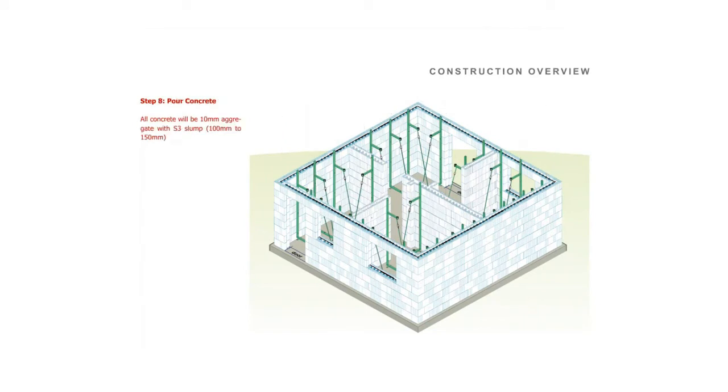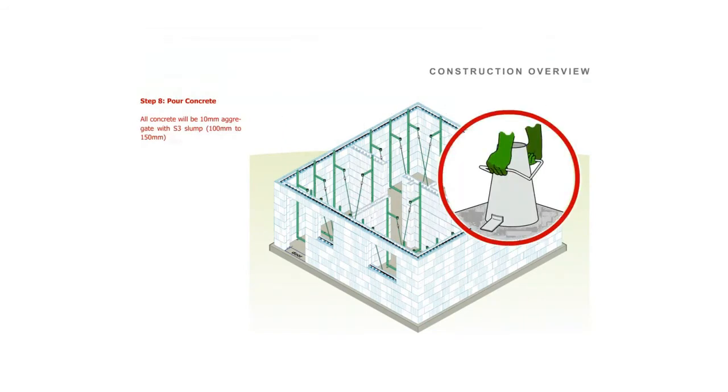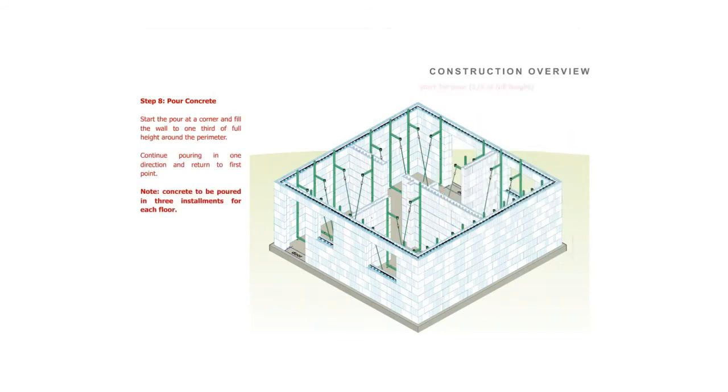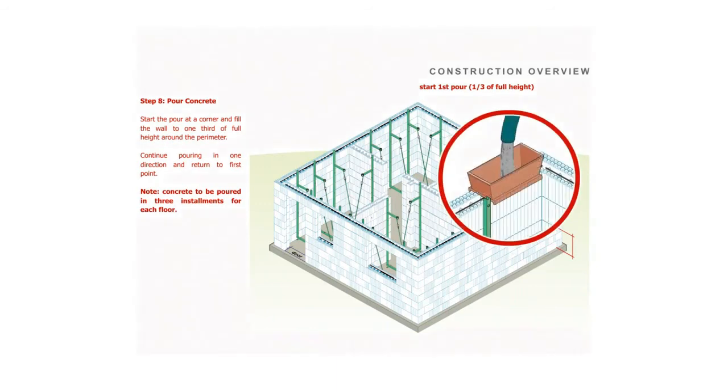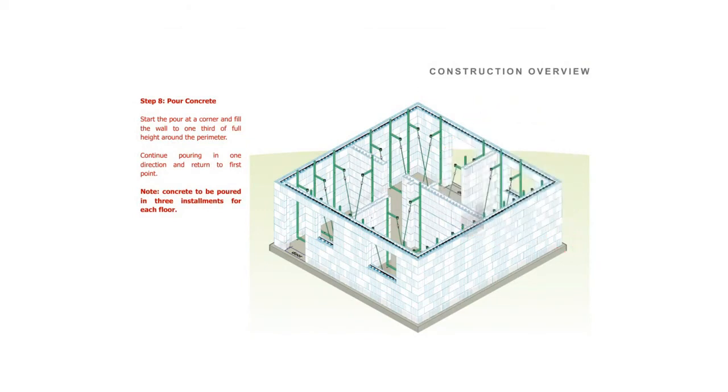Step 8. Pouring concrete. All concrete will be 10mm aggregate with an S3 slump, which is 100ml to 150ml. Start the pour at a corner and fill the wall to 1 third of full height around the entire perimeter. Continue pouring in one direction and return to the original point. Note that the concrete should be poured in three installments for each floor.